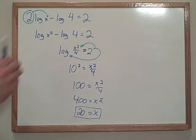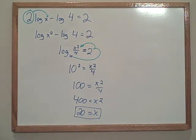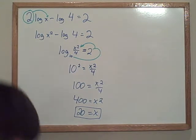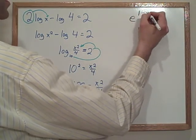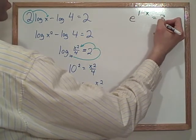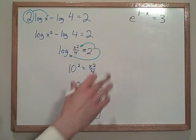Again, notice, if we start with a log, we end up working it out as an exponent. Let's do the next one. E to the one minus x equals three. And this starts as an exponent, so we're going to have to turn it into a log. So let's start by rewriting this.